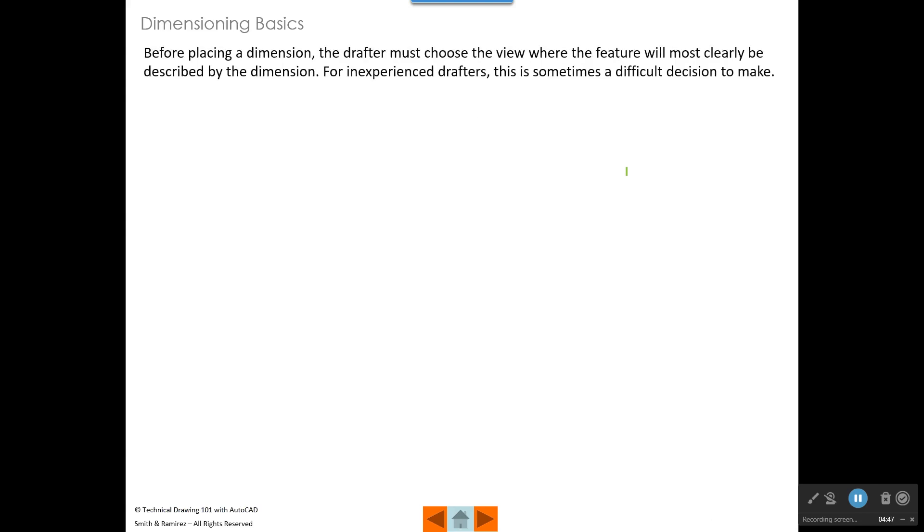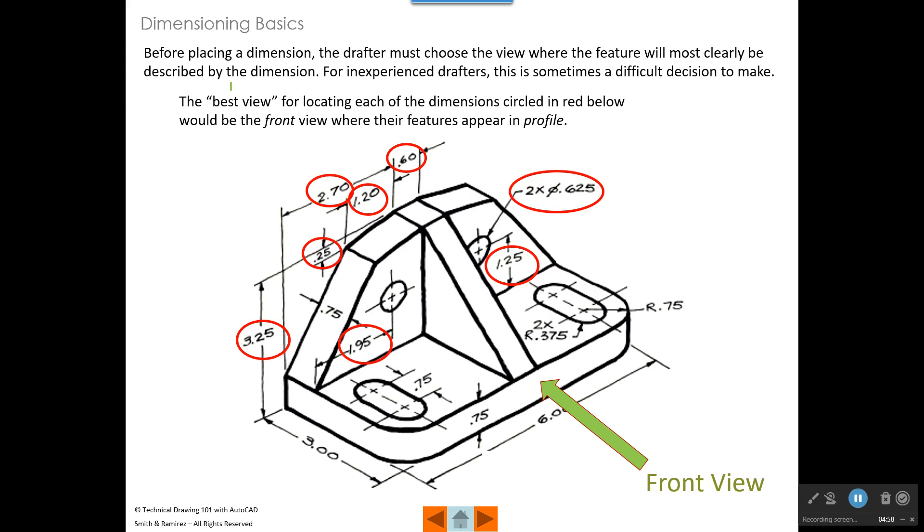Before placing a dimension drafters need to choose the view where the dimension will most clearly be described by the dimension. For inexperienced drafters, this is sometimes a difficult decision to make. But in general, the best view for locating a dimension is to place the dimension in the profile view of the feature. On this sketch that we have below, I have put a red ellipse around every dimension that should be shown in the front view if this is our front view. And the reason for that is that all of these dimensions will show in their profile view in the front view. So the profile view of a hole is where it appears as a circle. And the profile view of an angled surface is where it appears as an edge. Generally speaking, there may be exceptions to that, but generally speaking, that's what you want to look for.